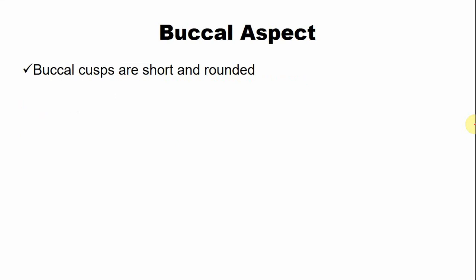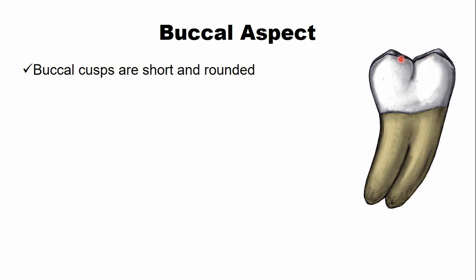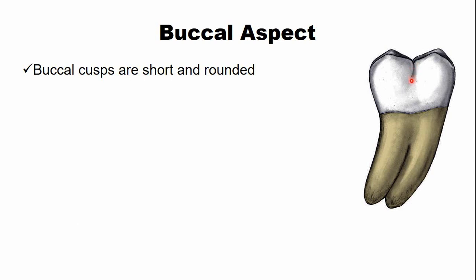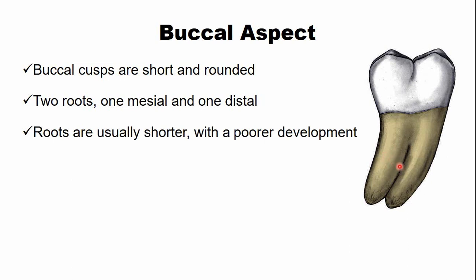From the buccal aspect, the mandibular third molar has cusps that are short and rounded. The buccal cusps — the mesiobuccal cusp and the distobuccal cusp — are short and rounded, with a buccal developmental groove between them. Similar to other mandibular molars, there are two roots: the mesial root and the distal root.